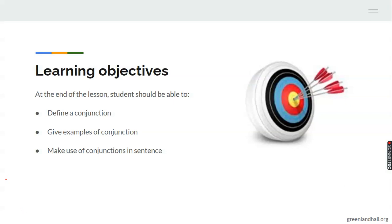At the end of this class you should be able to define conjunction, give examples of conjunction, and make use of conjunction in a sentence.